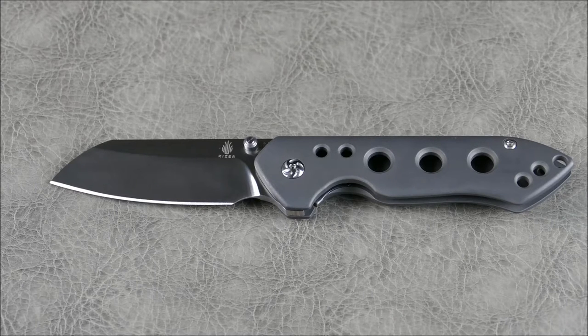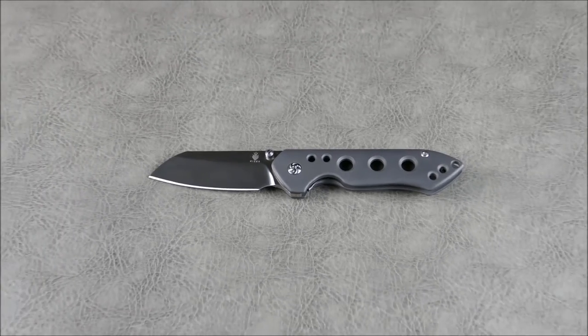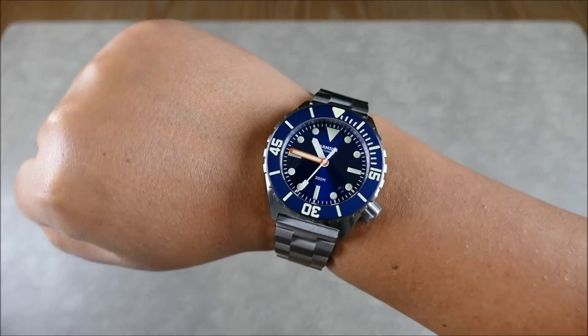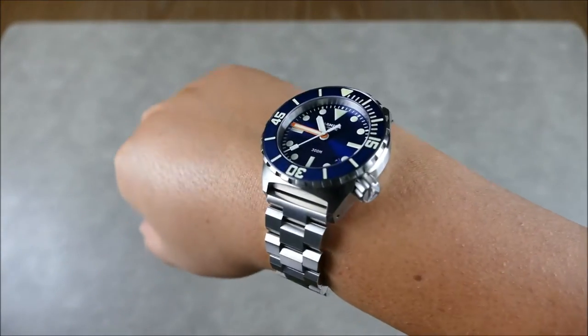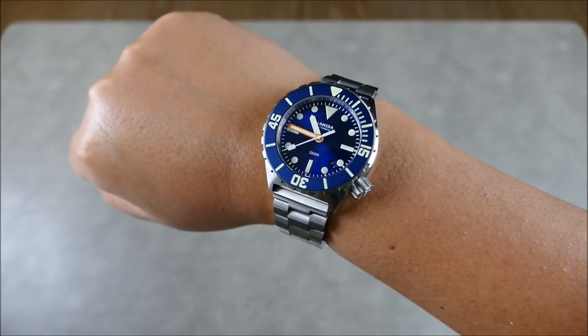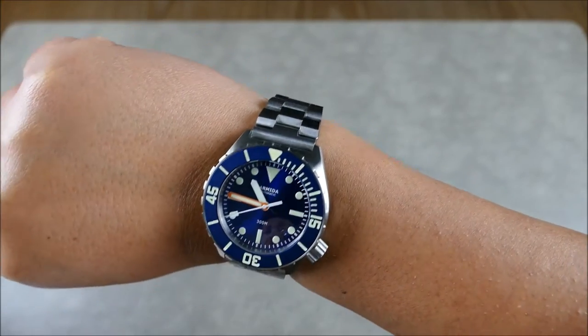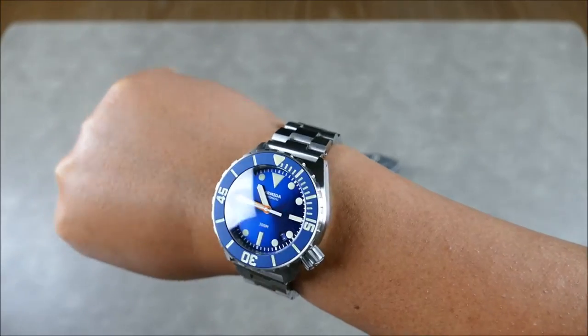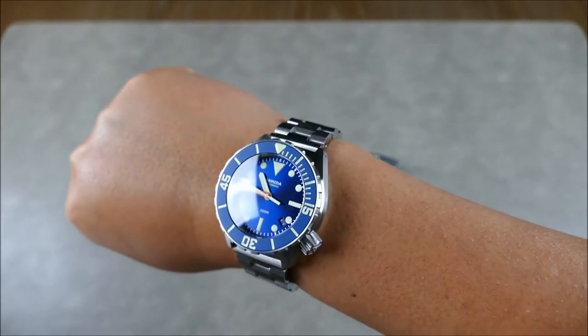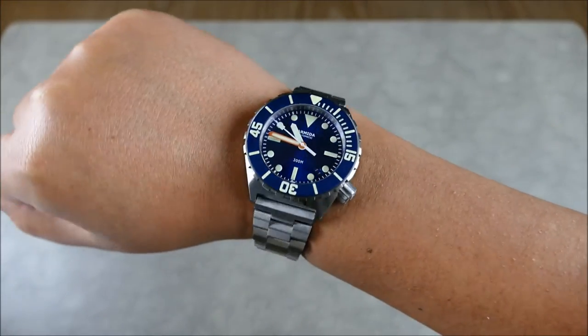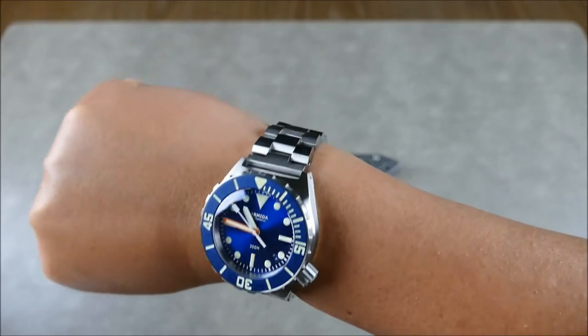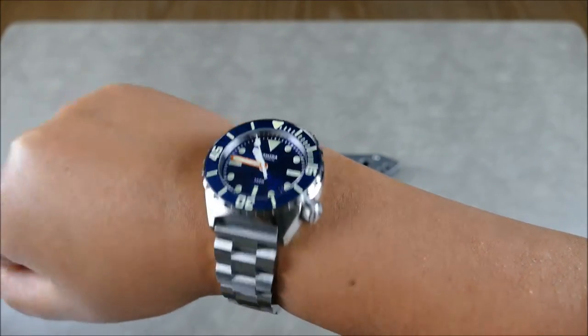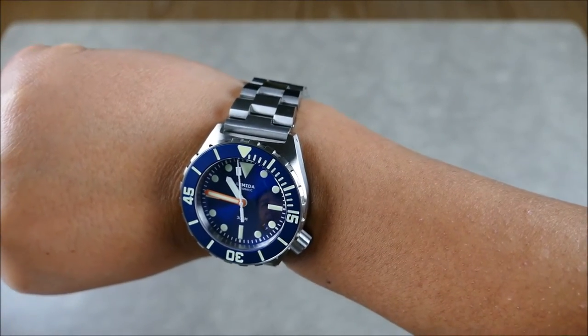Before we get too much into this particular piece, let's go ahead and squeeze in the customary wristwatch check. Today I have the Armida A1. This is the brand new batch for 2017 that actually has the orange seconds hand added and the date. This particular dial option is the sunburst blue.